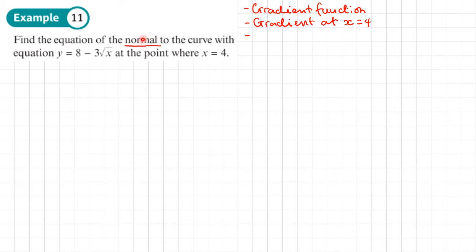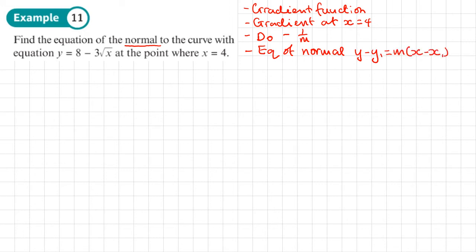Because it's a normal — perpendicular to the tangent — we then do negative 1 over m to find the perpendicular gradient. Once we've done that, we can find the equation of the normal using y minus y1 equals m times x minus x1. We'll have the value of x, which is 4, but we won't have the value of y, so we need to put x equals 4 into the equation to find y1.